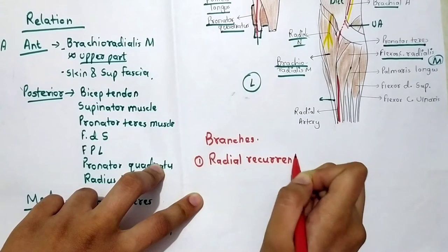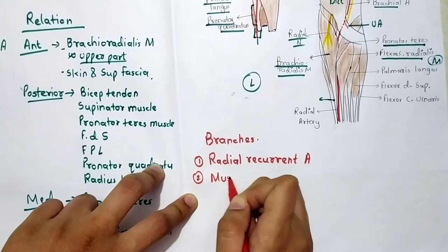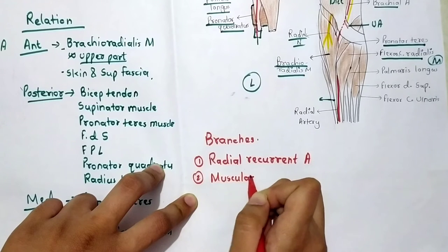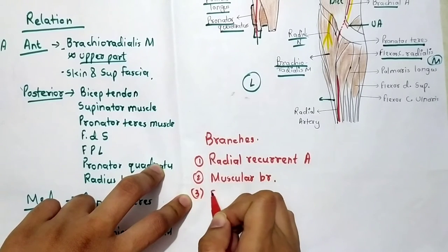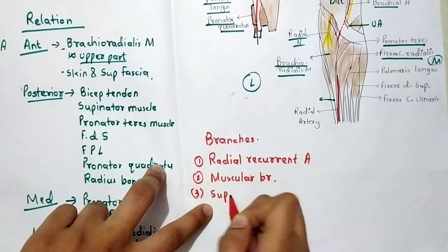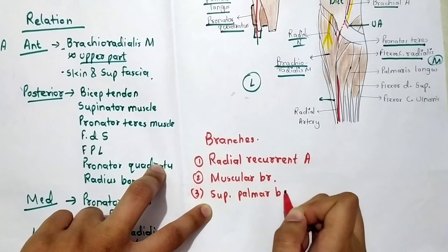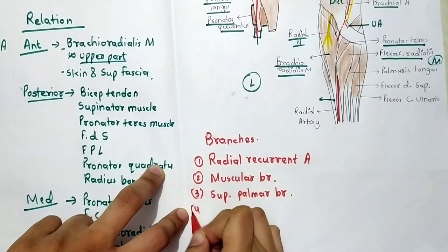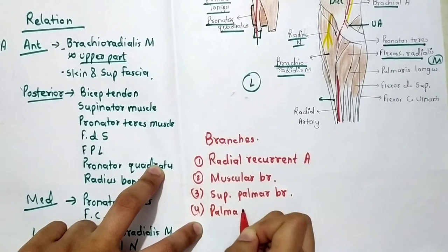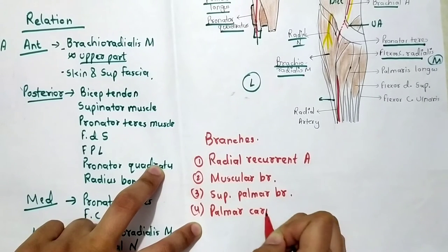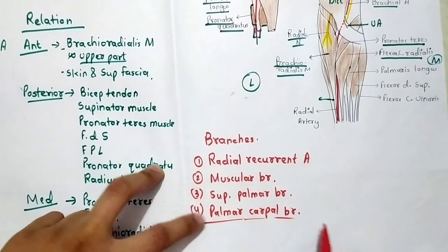To summarize the four branches: first is the radial recurrent artery, second is the muscular branches, third is the superficial palmar branch, and fourth and last is the palmar carpal branch.